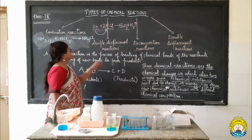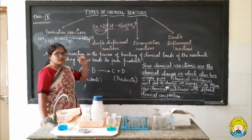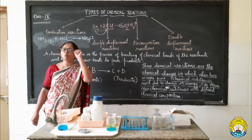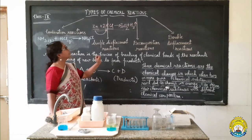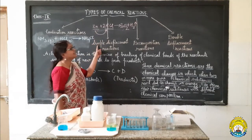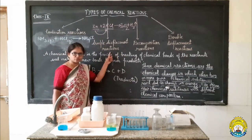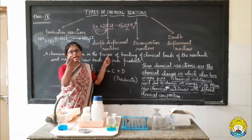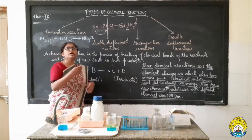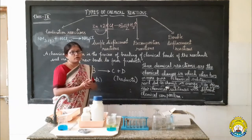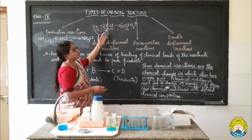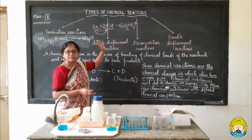So what kind of reaction is this? This is a simple displacement reaction. Why is it called a simple displacement reaction? Because the displacement of only one type of atom is taking place — the displacement of only the hydrogen atom is taking place by zinc. You can have other examples of simple displacement reaction: in place of zinc you can use iron, magnesium metal, or other active metals which have the ability to displace hydrogen from hydrochloric acid.